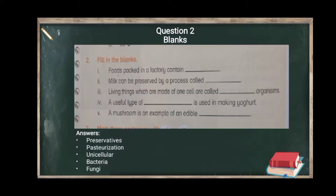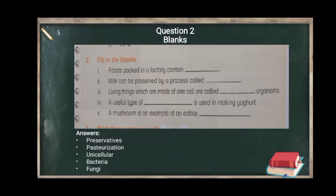Now moving to question 2, fill in the blanks. First: foods packed in a factory contain preservatives — these are substances that keep food safe for a limited time period. Second: milk can be preserved by a process called pasteurization — we heat the milk to a temperature that kills the germs, making the milk safe.